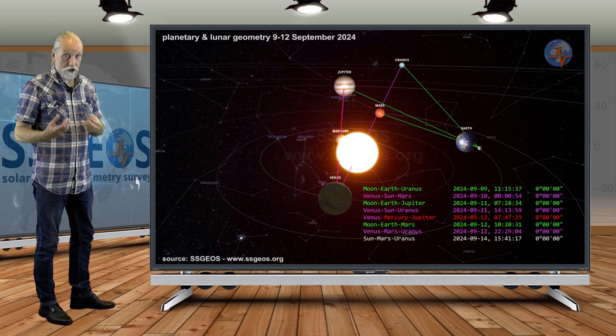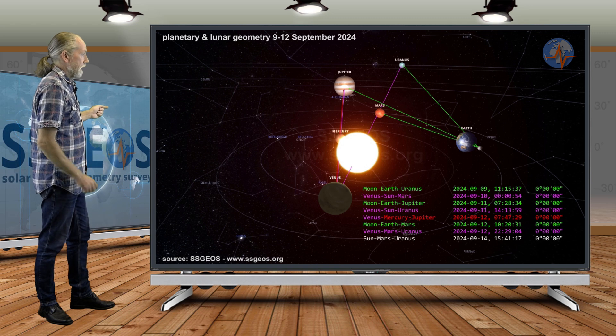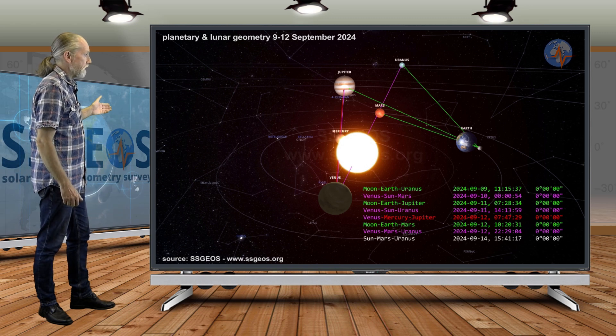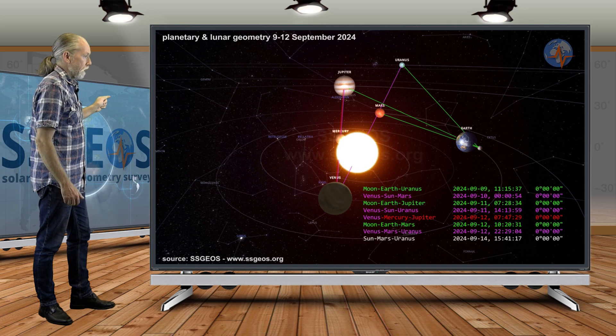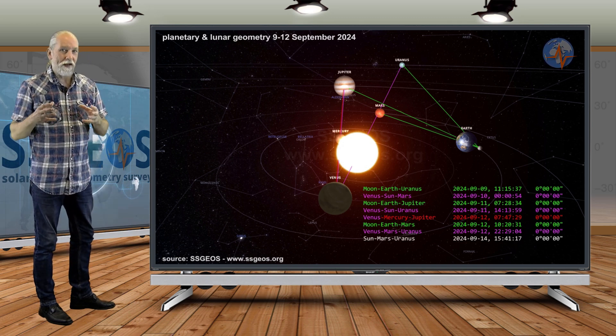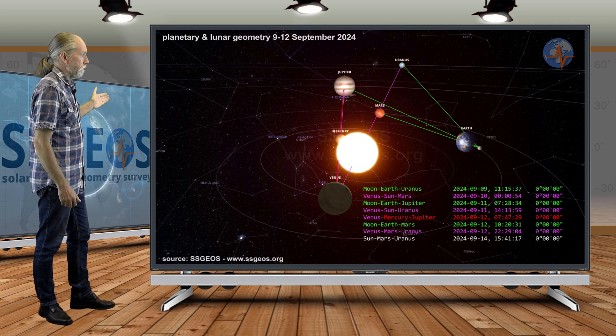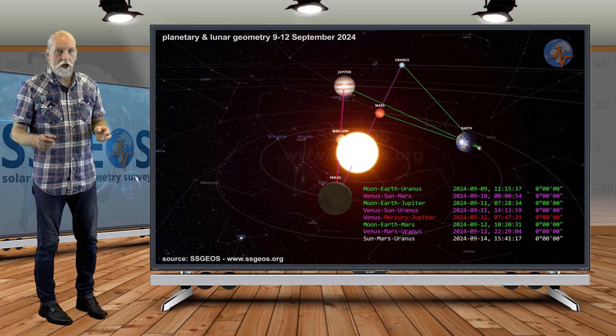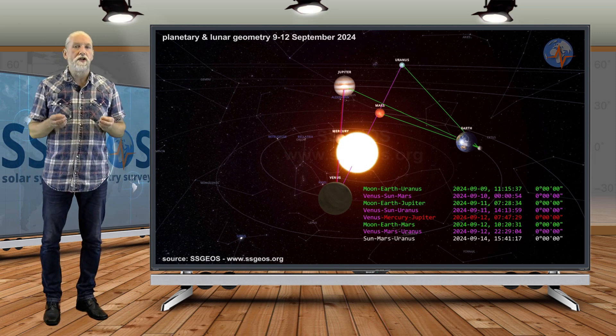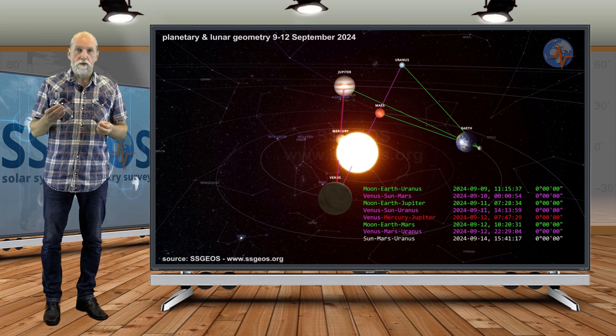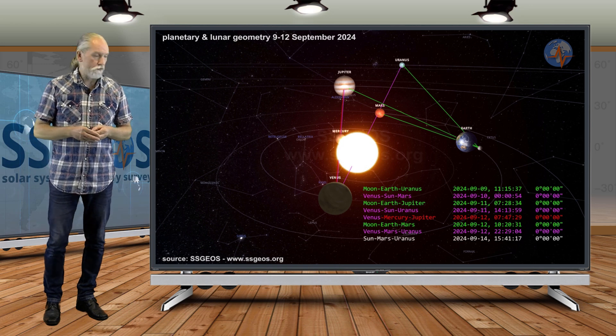In the solar system, we see this planetary geometry. Purple marks the conjunctions with Venus. And we see Venus, Mercury, and Jupiter. And that will be on the 12th. On the 12th, there will be a convergence of planetary and lunar conjunctions. We also have Venus with Sun, Mars, and Uranus. That's not a tight quadruple conjunction, but it is a near quadruple conjunction.